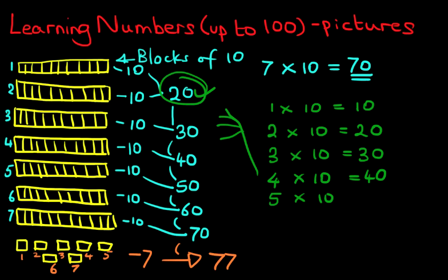Carrying on, 5 times 10, 50. 6 times 10, 60. Now notice the zeros remain the same. It's only the digit on the left that changes.